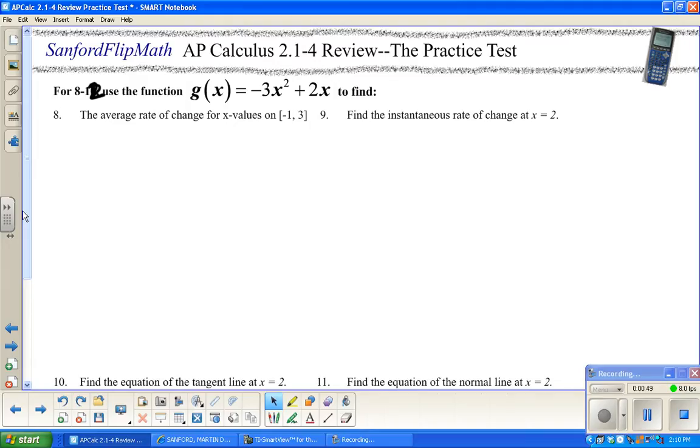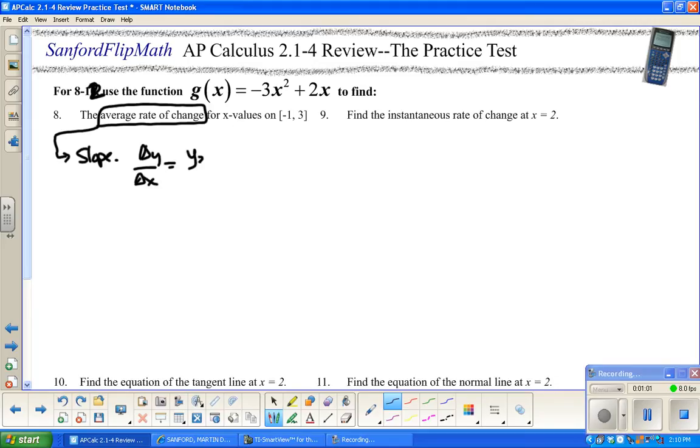Average rate of change, as you recall, the synonym for that is really like back in Algebra 1, slope. It is the change in y over change in x, or if you prefer y2 minus y1 over x2 minus x1. To do this, we need an x and a y value, and an x and a y value. Negative 1 is an x value, 3 is an x value. And then if you want y values, remember this is the same thing as y equals negative 3x squared plus 2x.